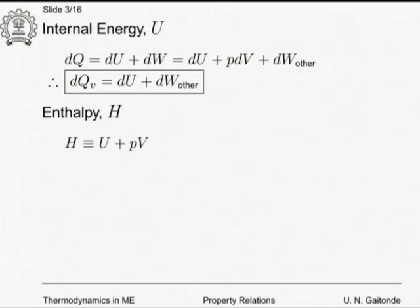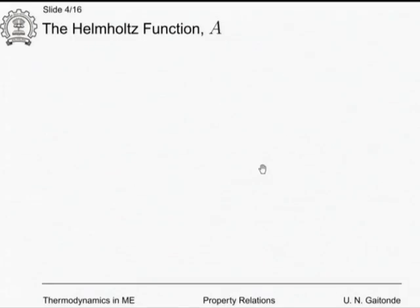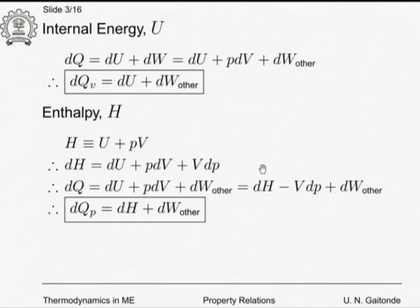Similarly, enthalpy H is defined as U + PV. So dH = dU + P dV + V dP. Now dU + P dV can be replaced by dQ, so dQ = dH − V dP + dW_other. If I consider a constant pressure process making dP = 0, then dQ at constant P equals dH + dW_other. No surprises here — that is because we are using only the first law.